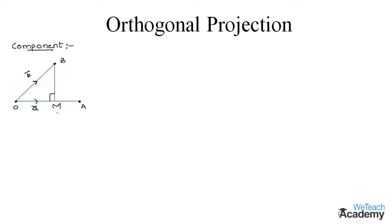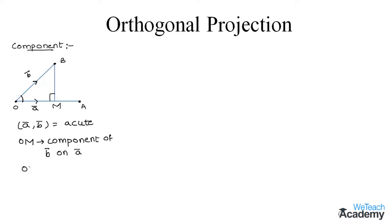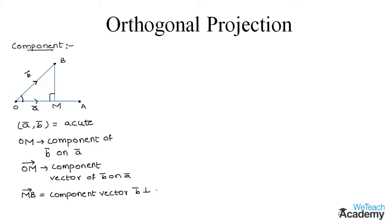From this diagram we can conclude that if the angle made between A bar and B bar is an acute angle, then OM is called the component of B bar on A bar. Similarly, the vector OM is called the component vector of B bar on A bar, and the vector MB is called the component vector of B bar perpendicular to A bar. This is the brief introduction about components.